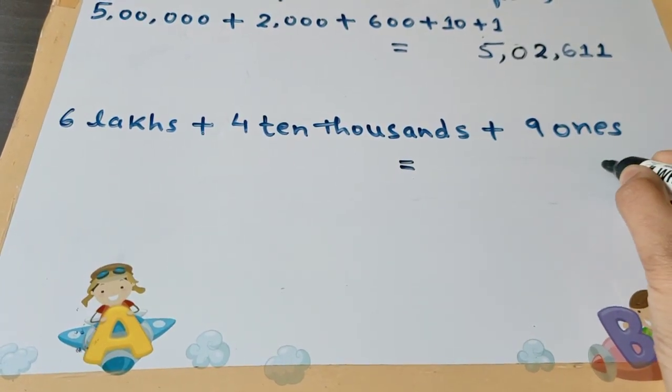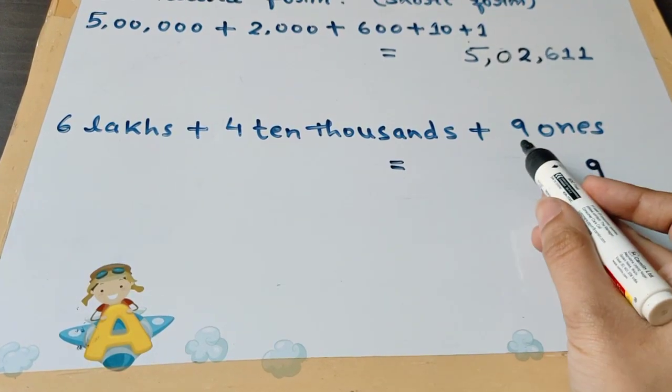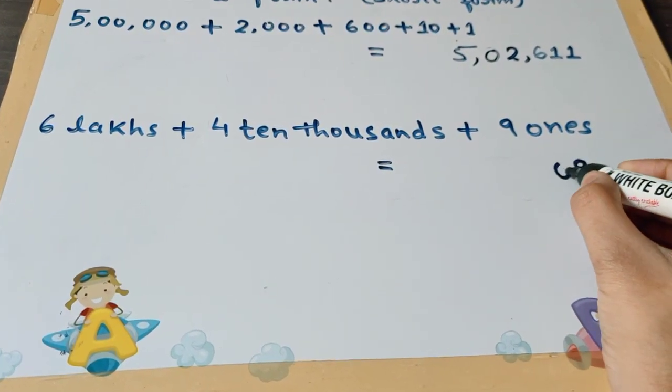9 is at the ones place, so we will write 9. At the tens place there is no number, so we will put a 0.